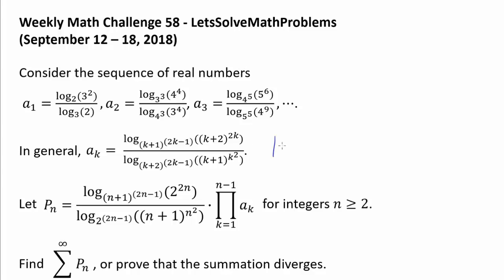Let's quickly verify this for the case when k is 3. When k is 3, k+1 is 4 and 2k−1 is 5, so we get 4 to the 5th power in the base. What we are taking the logarithm of is k+2, which is 5, to the 2k power, which is 6. The top looks good, and by the same reasoning the bottom gives 5 to the 5th power and 4 to the 9th power.